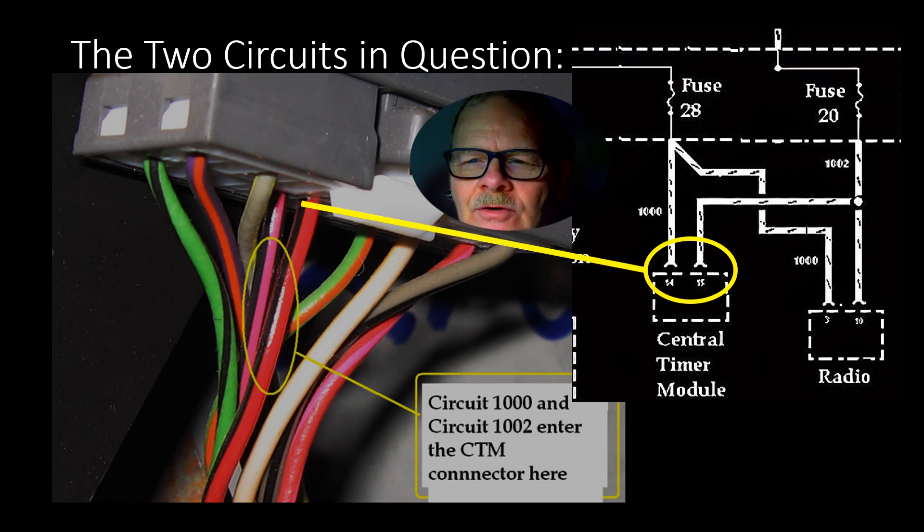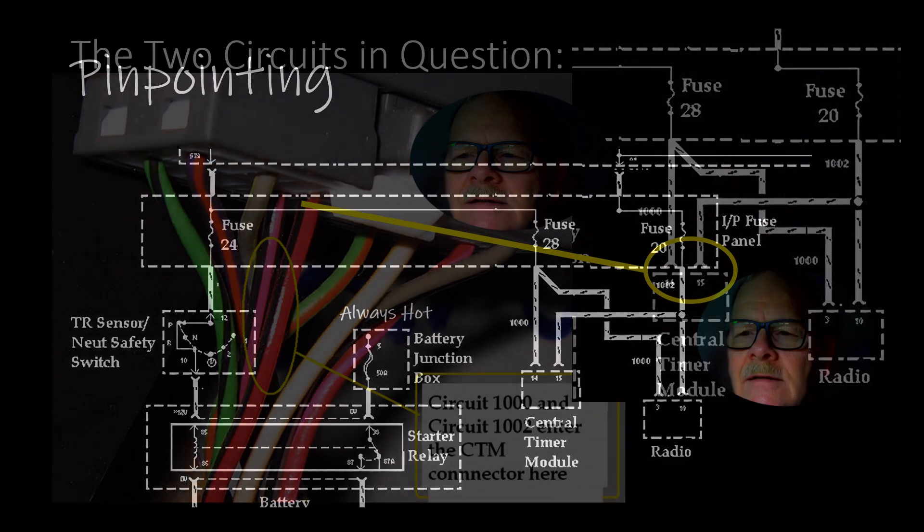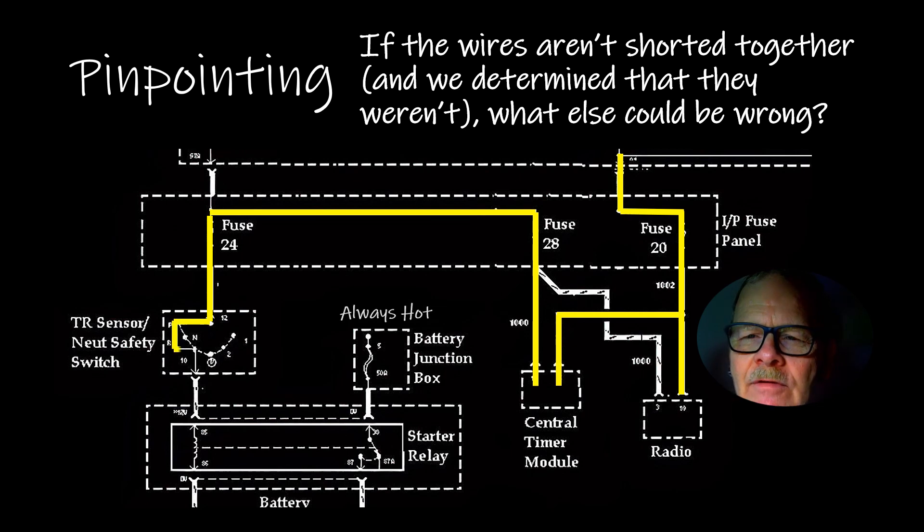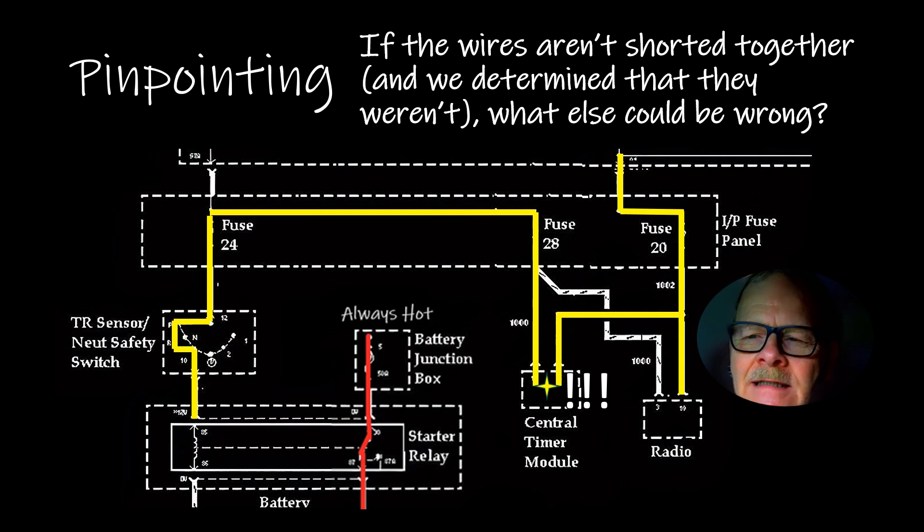The two circuits in question, circuit 1000 and circuit 1002, enter the central timer module right here. There's a common point that looks like it may be something. Those wires weren't shorted together - we figured out that they weren't shorted together, so it had to be inside the central timer module.